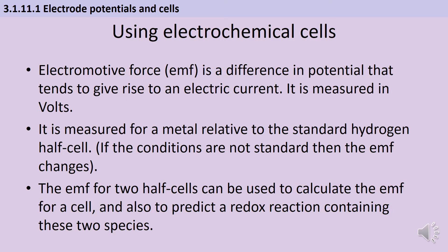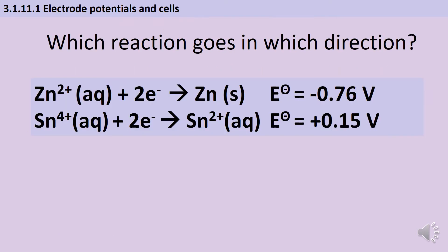Now if we know the potential of two half cells we can calculate, without needing to put them together, what the overall potential difference of a whole cell made of those two half cells would be. We can also use that to figure out whether a redox reaction containing those two species would actually work or not — whether it would be spontaneous, whether it would happen on its own. In any given cell you have two half cells, and one of those half cells is undergoing oxidation and the other one is undergoing reduction.